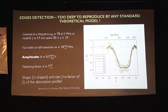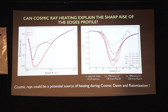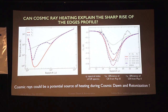In our case, to explain the excess absorption depth, we have considered the interaction between dark matter and baryons. When we consider the dark matter interaction and turn on cosmic ray heating, and plot it with the EDGES profile, we can see that cosmic ray heating can actually provide significant heating and explain the sharp rise of the EDGES profile.